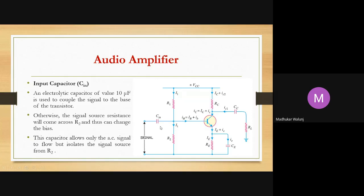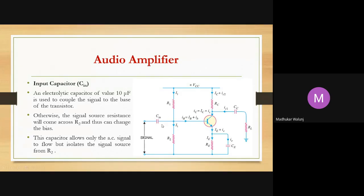The input capacitor C_in is an electrolytic capacitor of value 10 microfarad, used to couple the signal to the base of the transistor. The capacitor always passes the AC signal and blocks DC signal. So any DC hum will be neglected by C_in. The signal source resistance will come across R2, forming a parallel combination of R2 and the input signal source, which would change the biasing. So this capacitor allows the AC signal to flow but isolates the signal source from R2, meaning no DC current flows through C_in. Therefore, only the AC signal flows towards the base — this is the important role of the input capacitor C_in.